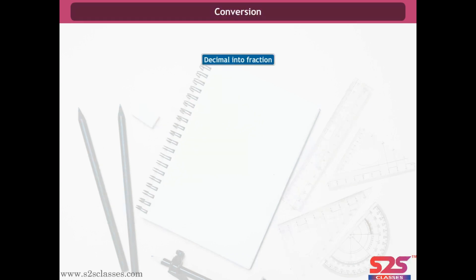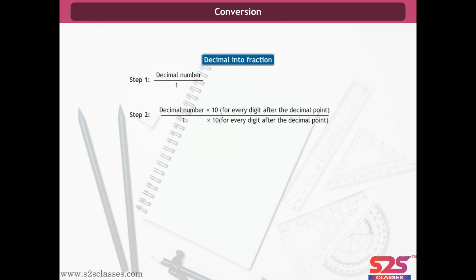Conversion of decimal into fraction. Step 1: write the decimal number divided by 1. Step 2: multiply both top and bottom by 10 for every digit after the decimal point. For example, 0.65 is multiplied and divided by 100 because there are two digits after the decimal point. Step 3: simplify the fraction. The numerator and denominator of 65/100 are divisible by 5; dividing gives 13/20. So 65/100 = 13/20.